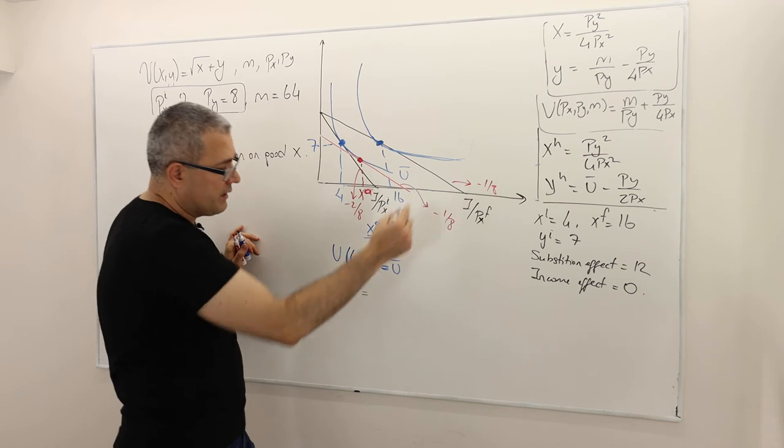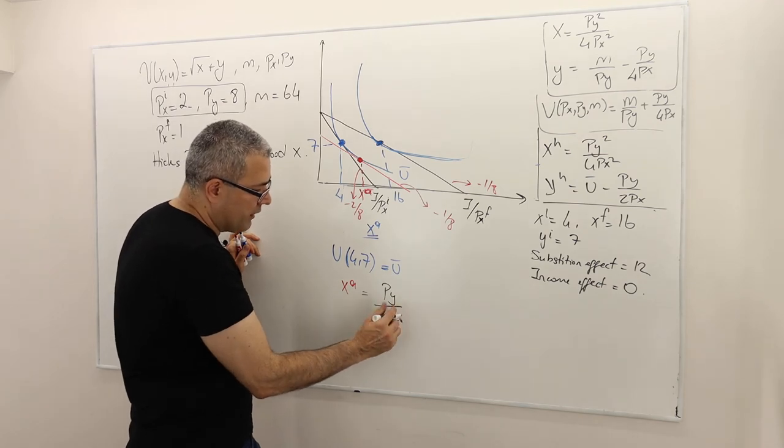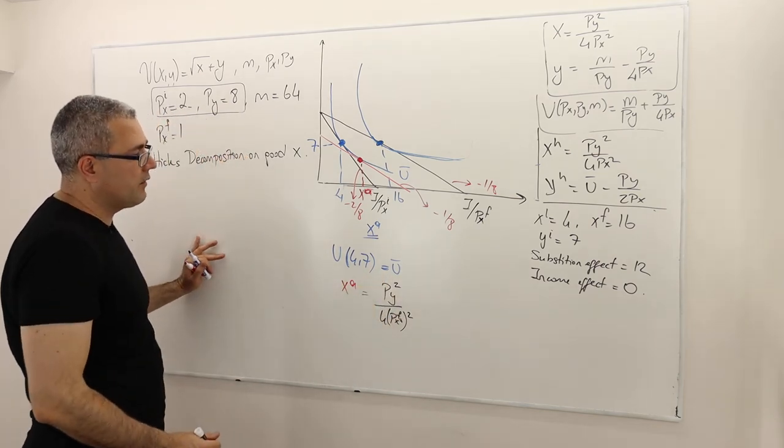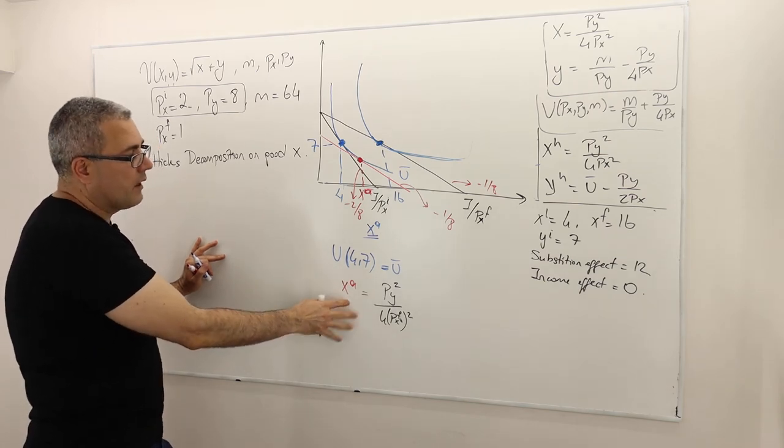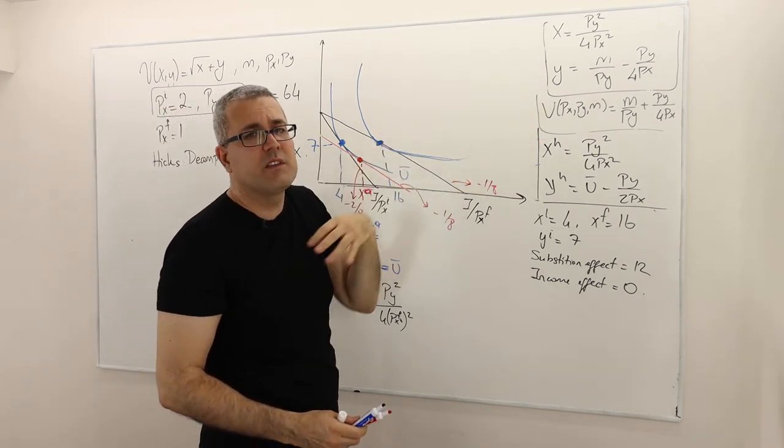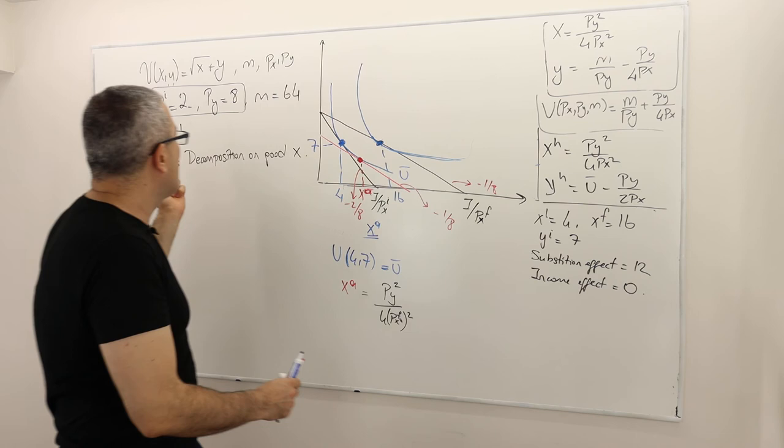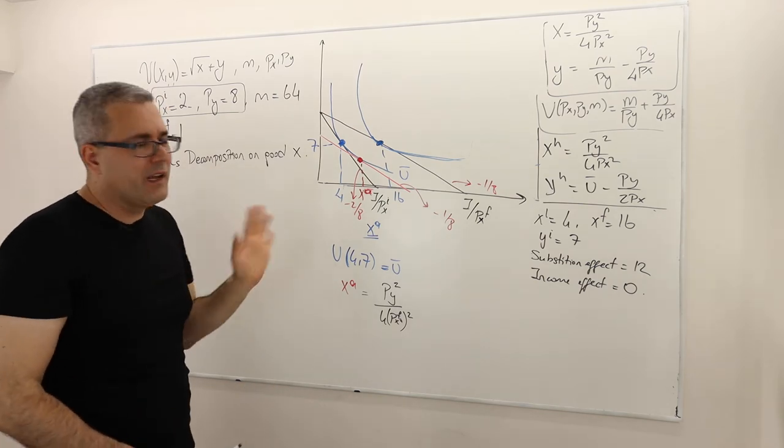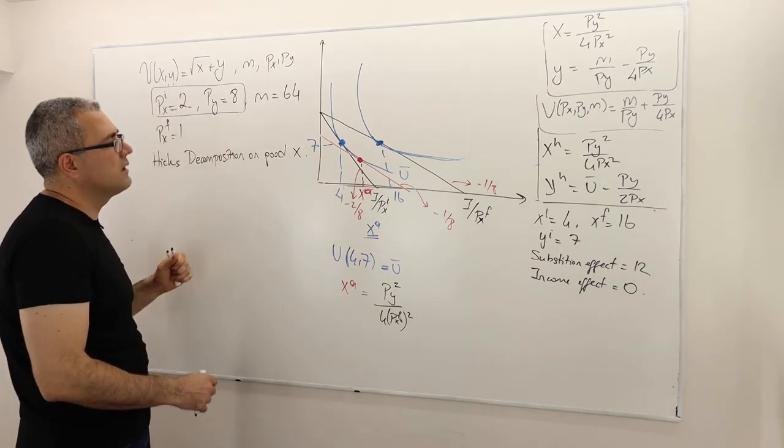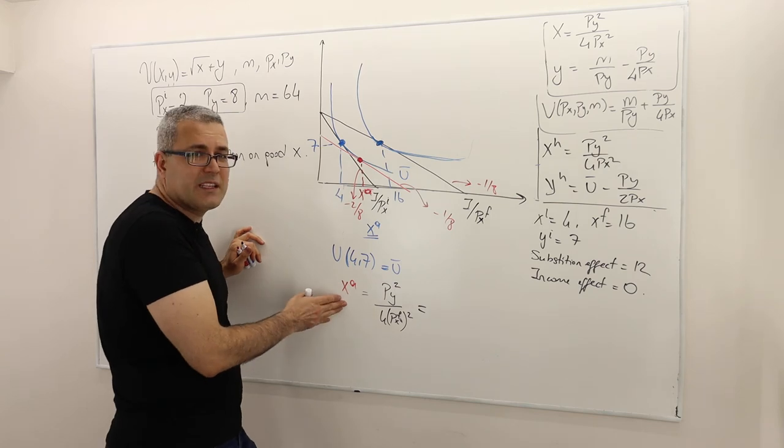So what is this XA? Well, it's going to be price of good Y squared divided by 4PX squared. But this is the final price squared. So if you do this, you don't really need to calculate U bar in this example. Because as you see, the X component doesn't depend on U bar. Only Y component depends. And this is probably why in this question I ask decomposition for good Y, not X. But again, I just wanted to do the same thing for good X, just to make a comparison between the Hicksian and the Slutsky decomposition.